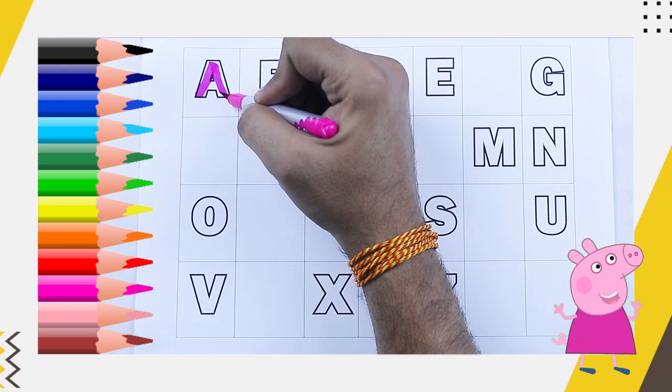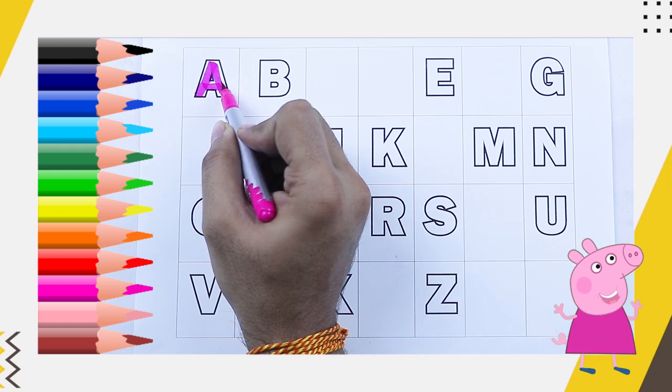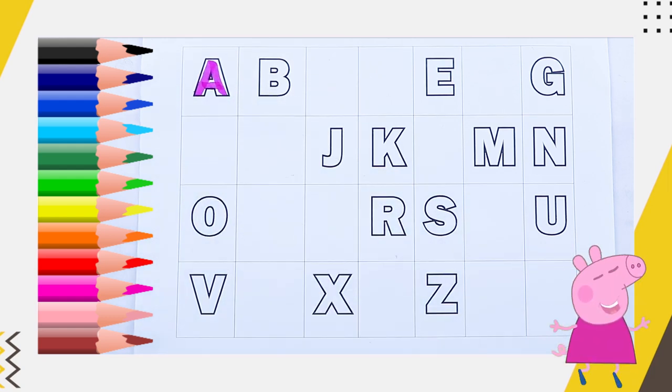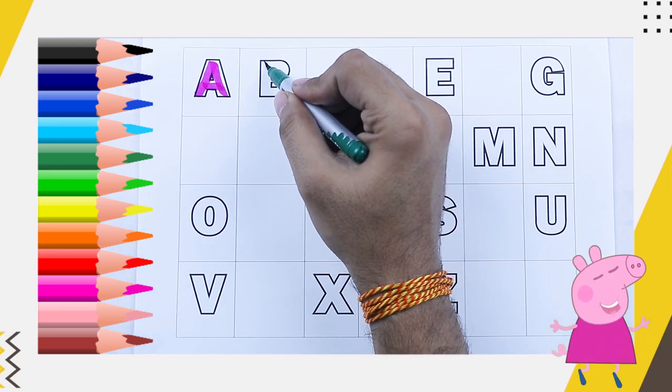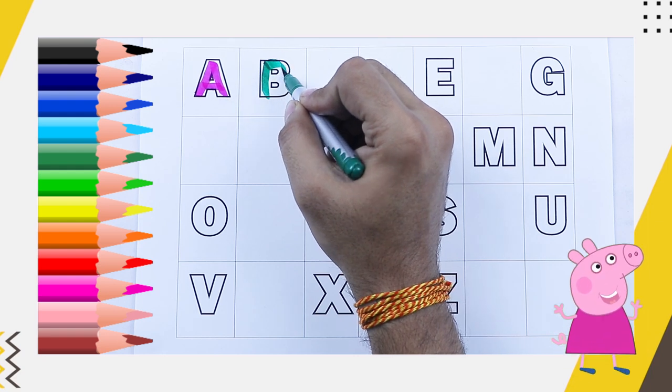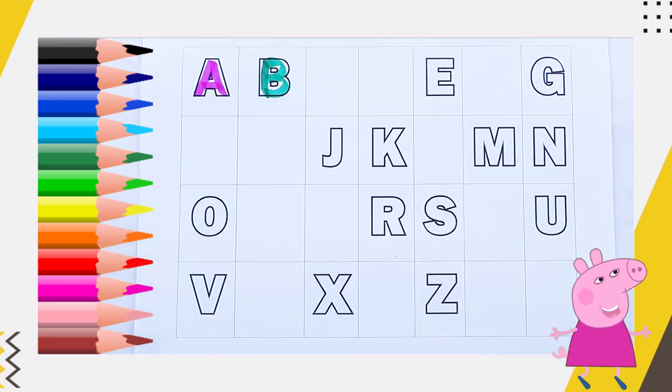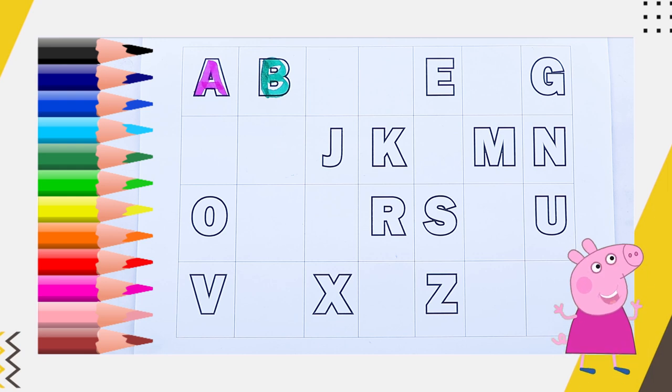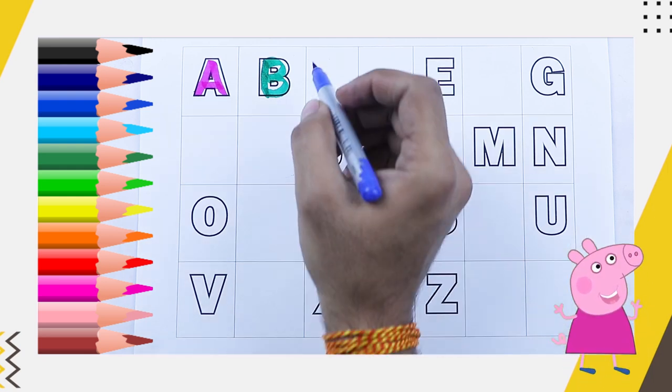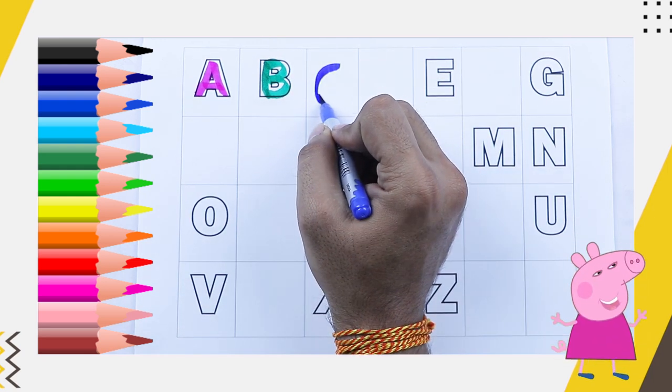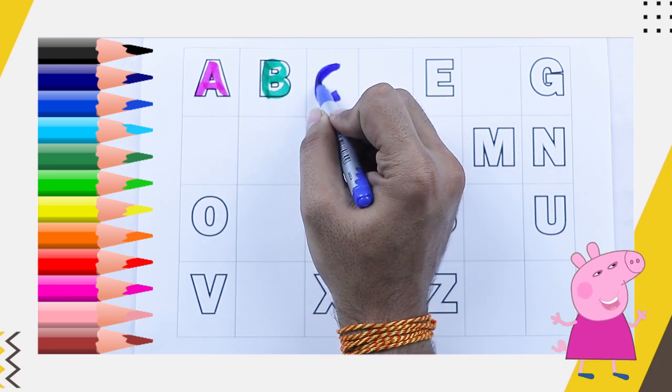Pink color, capital A, airport, apple. Green color, capital B, B for ball. Blue color, C, what next? C, C for cat.